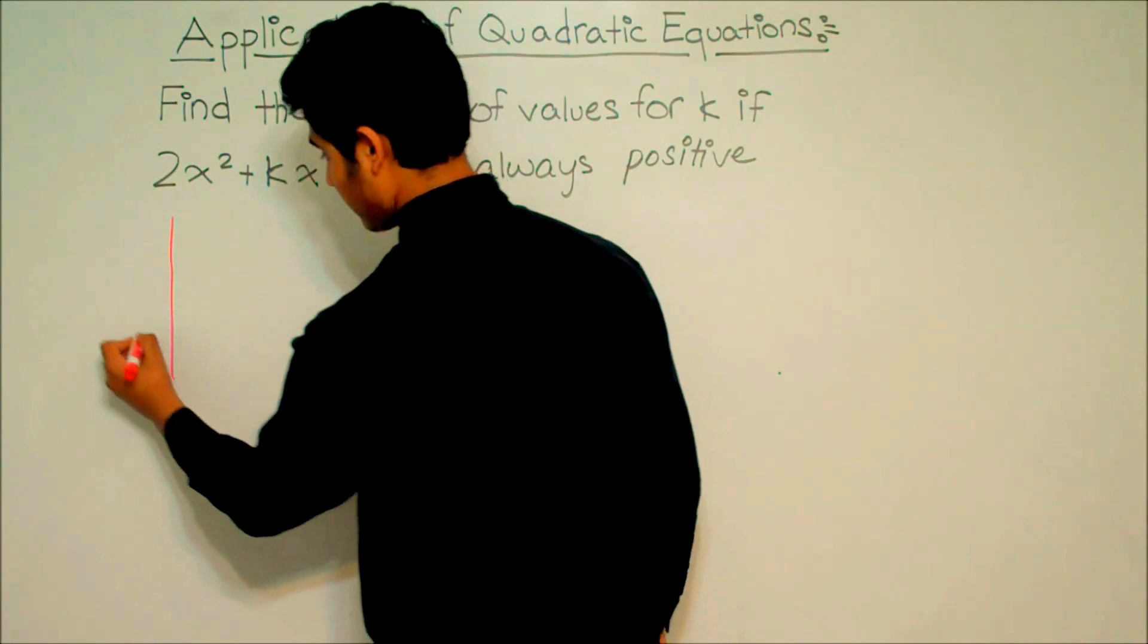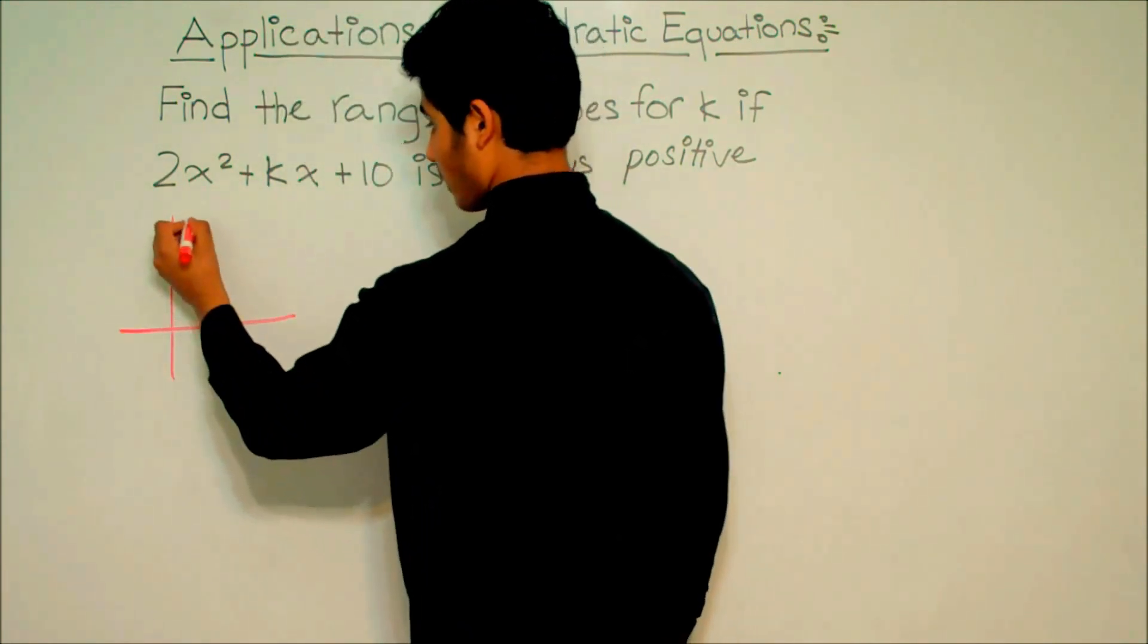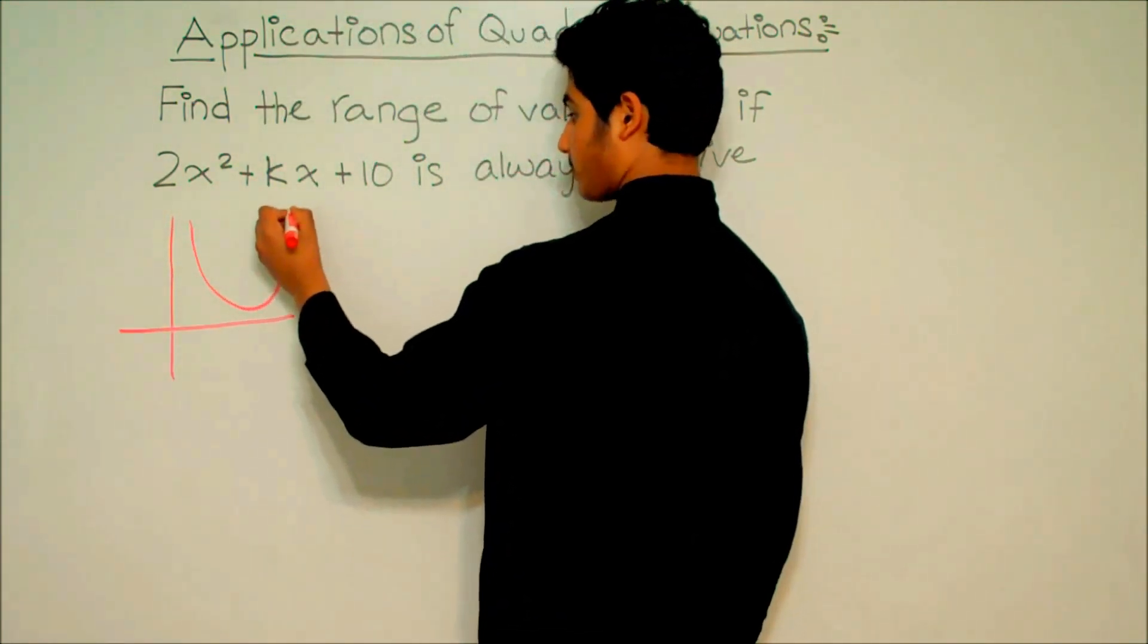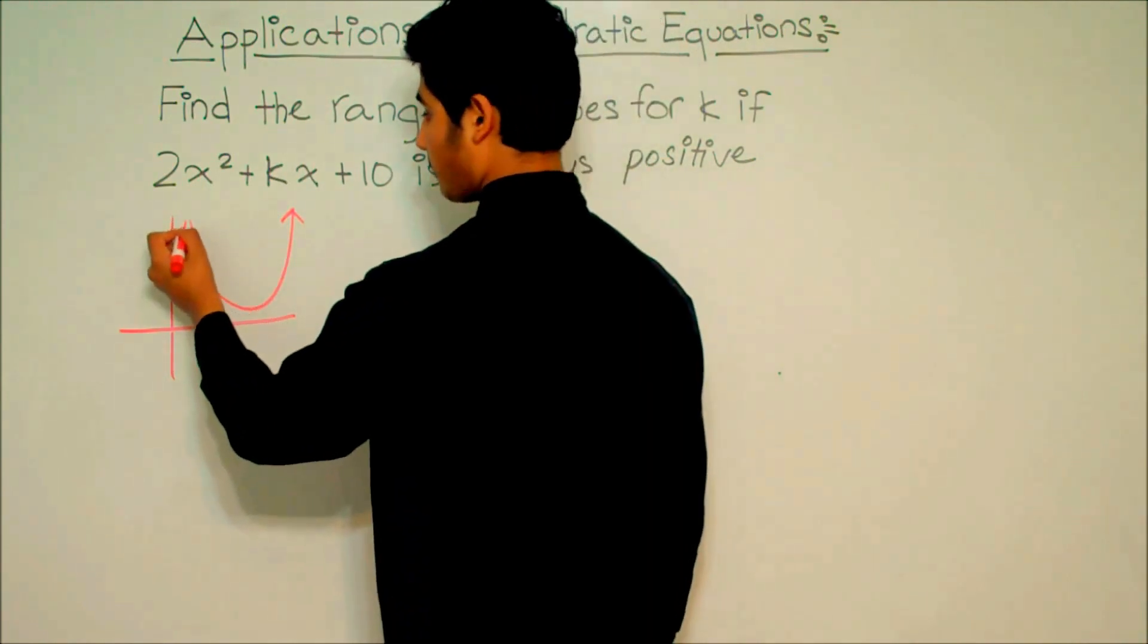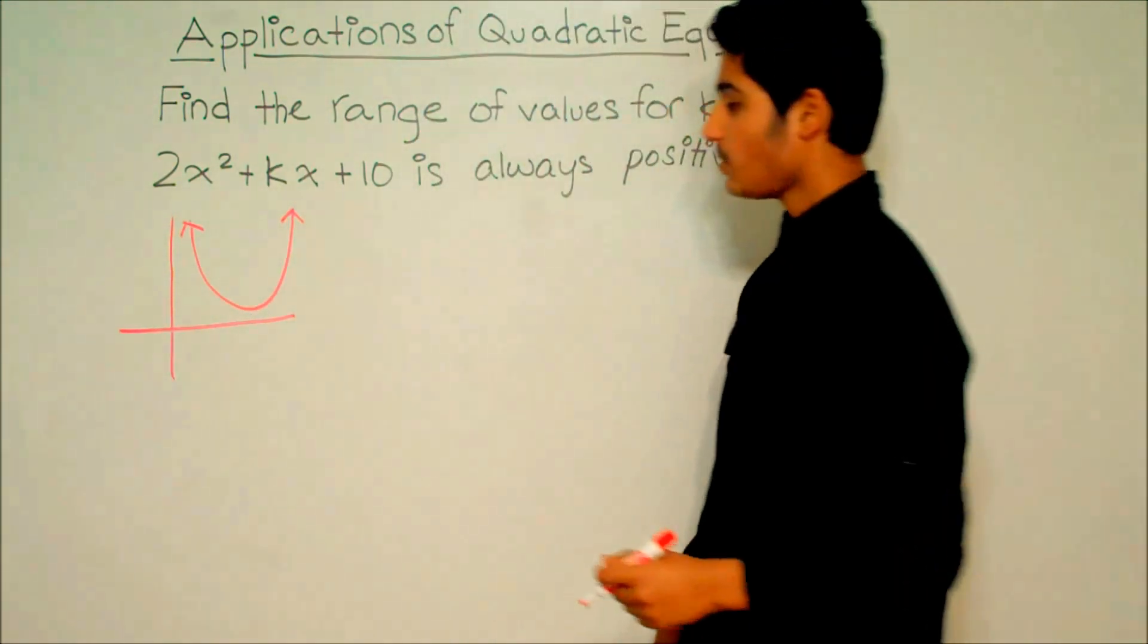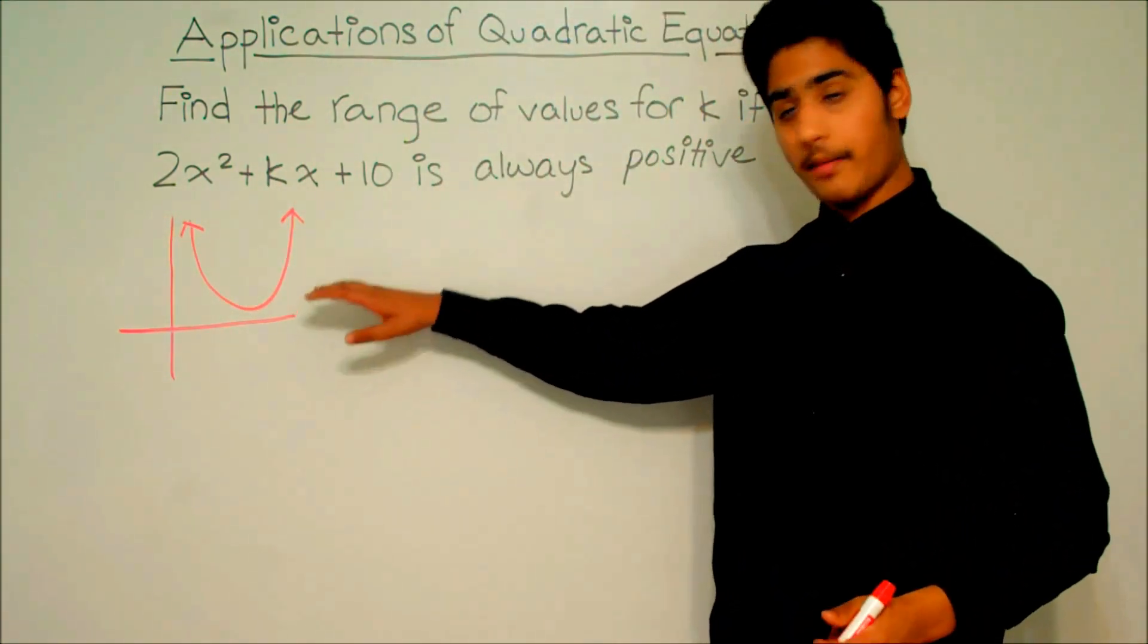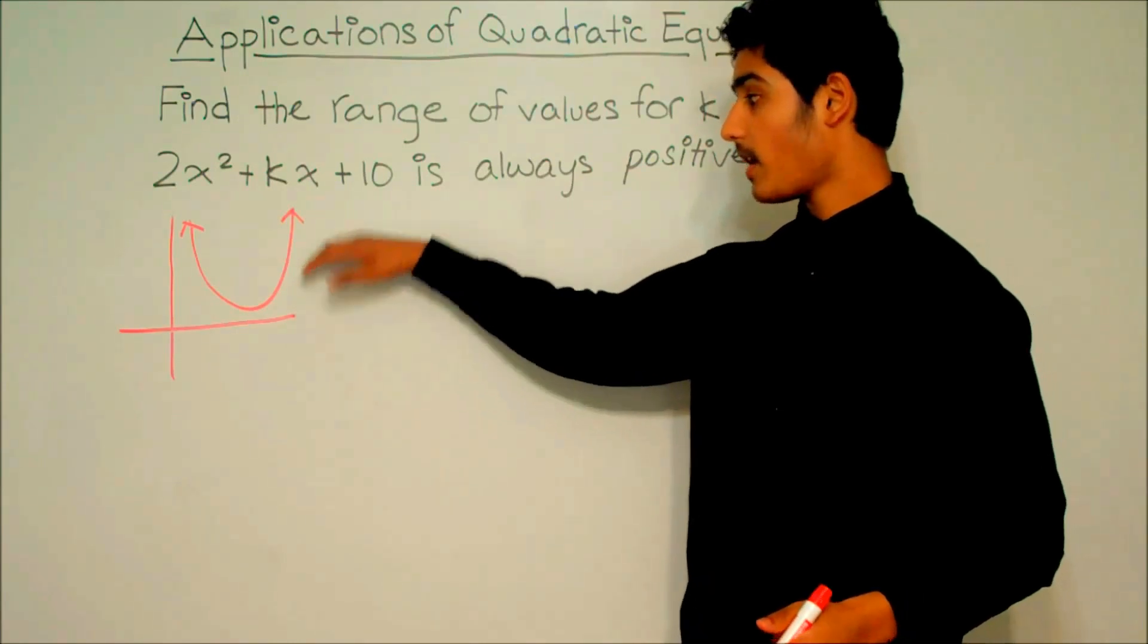We have the y-axis and the x-axis, and we have a quadratic parabola. As we can see, this is always positive because all the y-coordinates are positive.